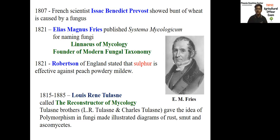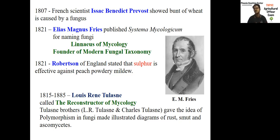Likewise, several important books were written by many scientists — starting from Nova Plantarum Generum and Systema Mycologicum, and in India we have Vriksha Ayurveda. Regarding management, it was started during 1821 by scientist Robertson, who used sulfur for the management of peach powdery mildew in England. This is considered the first fungicide use, unofficially reported — the first use of chemicals for the management of plant diseases.